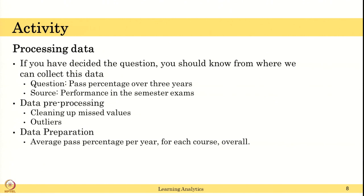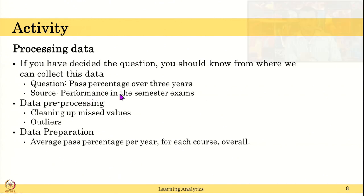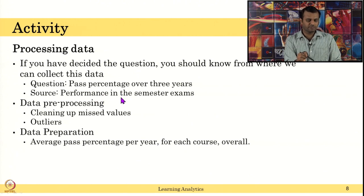Processing data — what data to collect and how to represent it — is very, very important. If you have decided on the research question, you should know where you can collect this data. For example, if I want to know how students' attendance and performance are correlated, or create a hypothesis that higher attendance leads to higher marks in the exam, I need to collect data such as their attendance and performance over the years. Based on your research question, you will know which data to collect and how. If it is pass percentage and performance over three years, I can collect data from mark sheets or semester or mid-semester exam results.